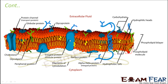Other than proteins and lipids, small amounts of carbohydrates and cholesterol are also present. Here you can see the small yellow structures — they represent cholesterol. So this is how the structure of a plasma membrane looks like.